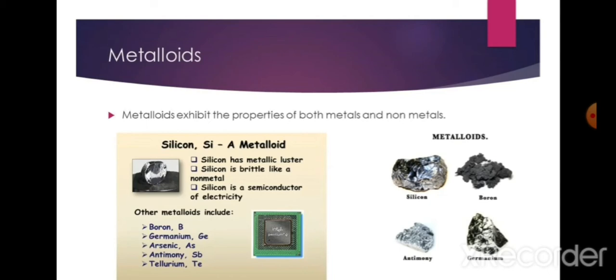Some examples of metalloids are: silicon, boron, antimony, and germanium.